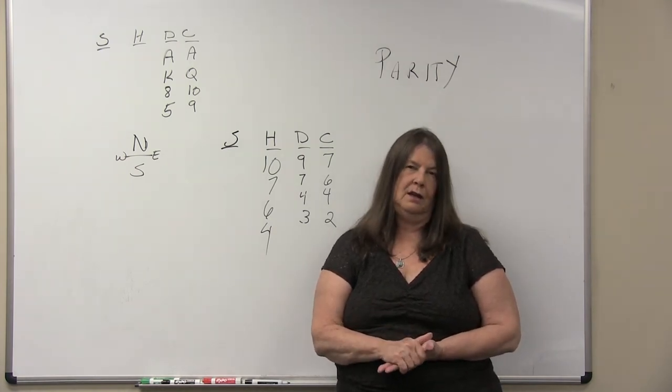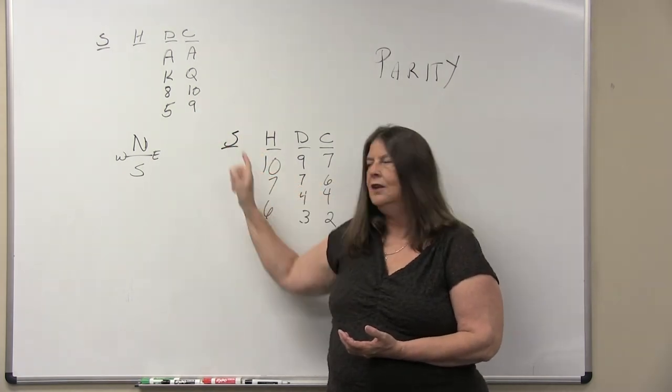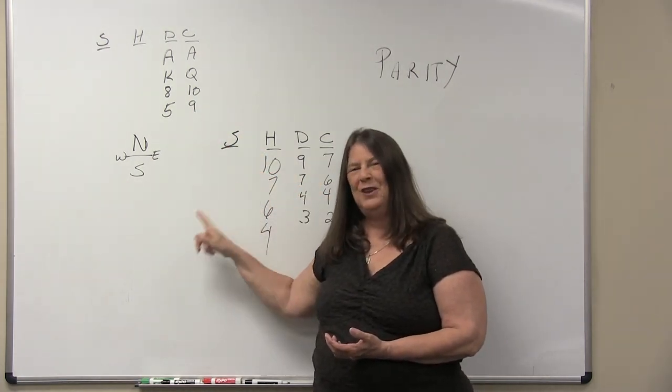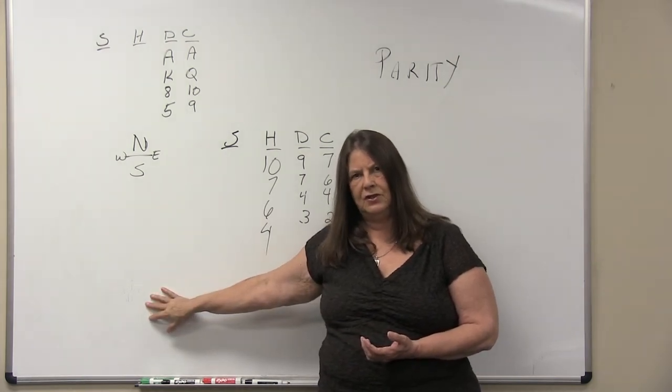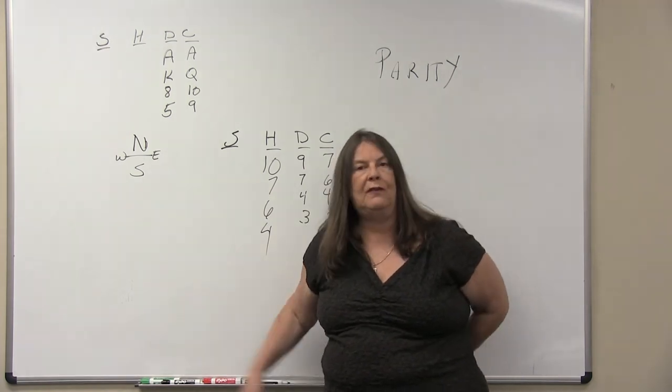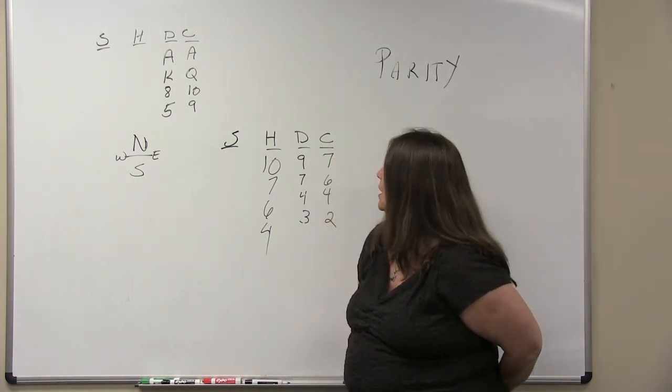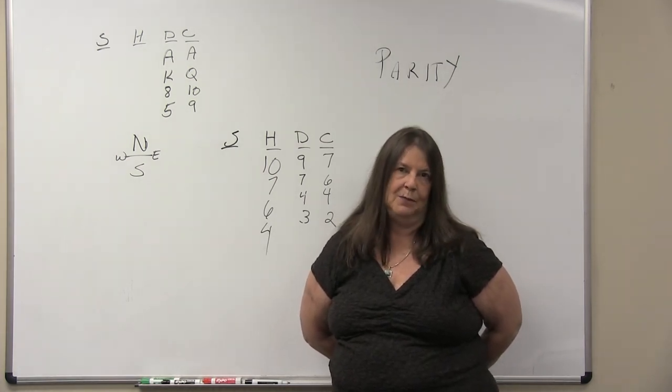That's an inferred parity. These are visible. That's pretty easy. The ones that catch people are the inferred parity, where you have inferred that declarer has a long suit, either through the bidding, the way he's playing the hand out, what you know about the other suits that he holds, and then you have to deduce that you have to keep a heart.